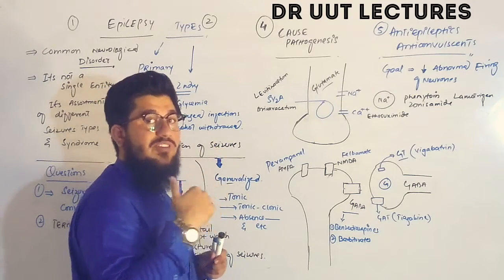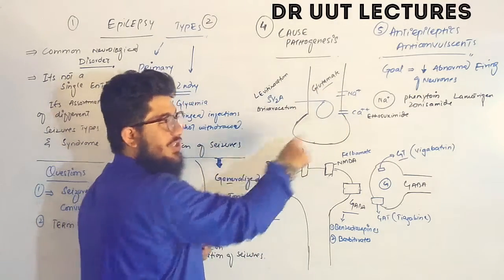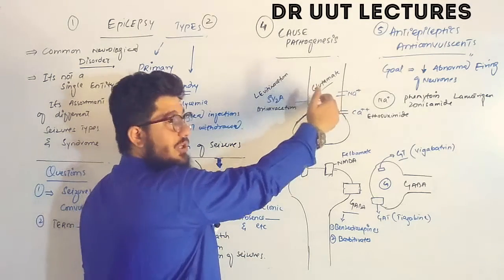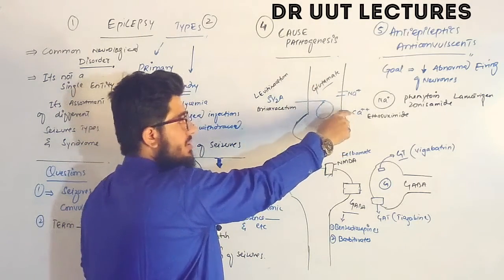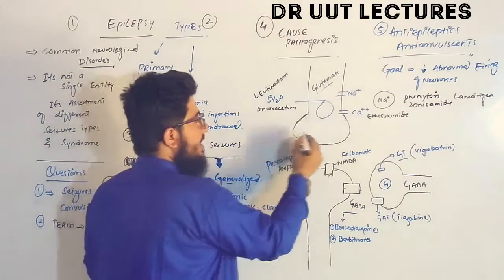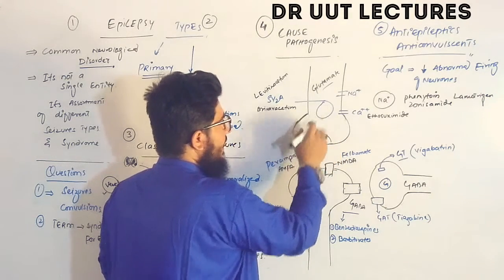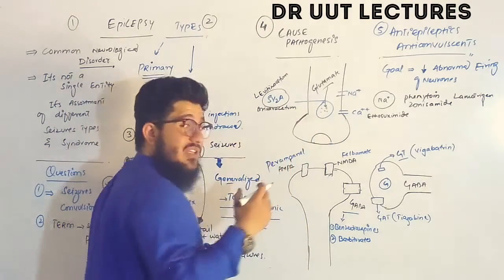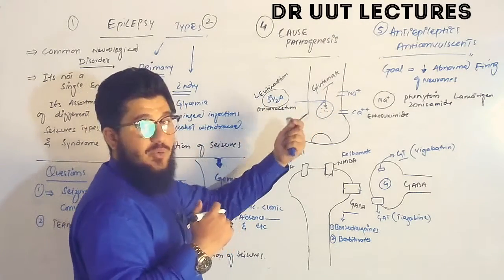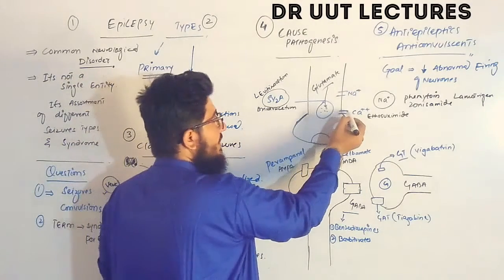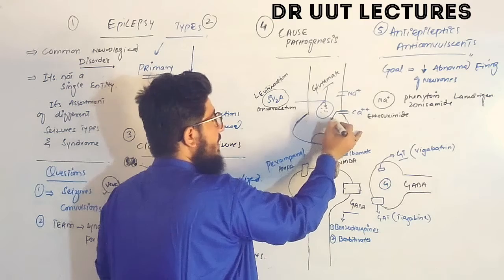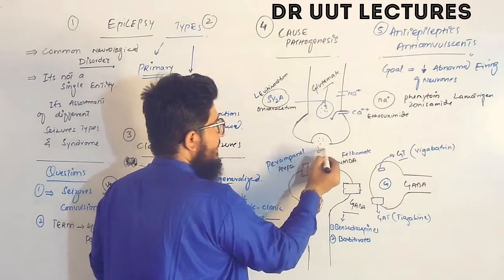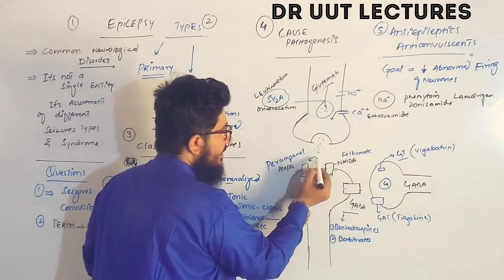When the voltage-gated calcium channels open, calcium influx occurs. Calcium causes fusion of the vesicle membrane — neurotransmitters are stored in vesicles via the SV2A transporter. When the action potential arrives, sodium moves in, voltage-gated calcium channels open, calcium enters, the vesicle fuses, and the neurotransmitter glutamate is released.